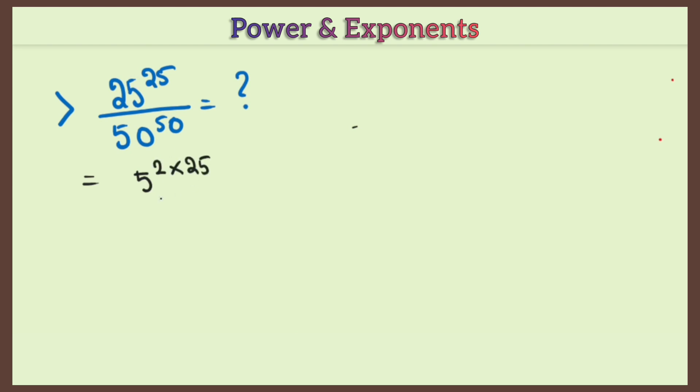So 25, why am I doing this? See below, 50 to the power 50. I need to bring both powers equal, so numerator and denominator, when both powers become equal, you can make it together.